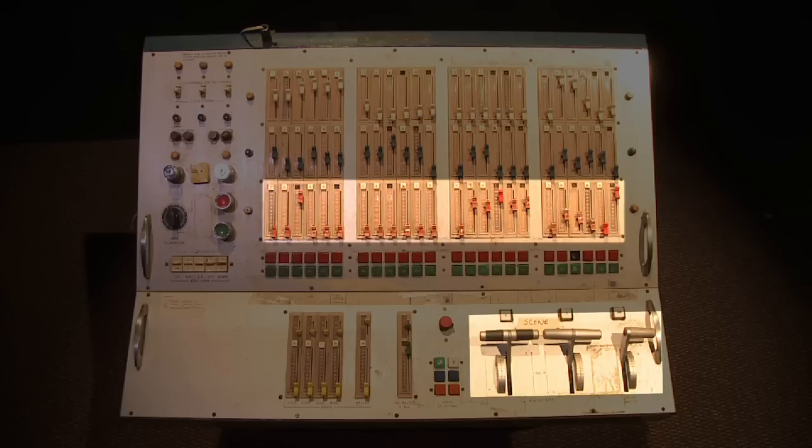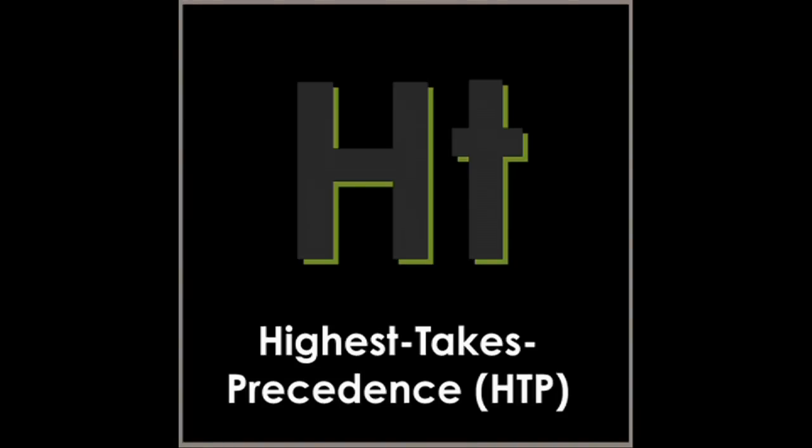If the master faders for two or more banks are active or above zero, then the faders that have the dimmers at the highest value have control. This is called highest takes precedence or HTP. If we lower the fader that had control, the next highest fader would then take control.